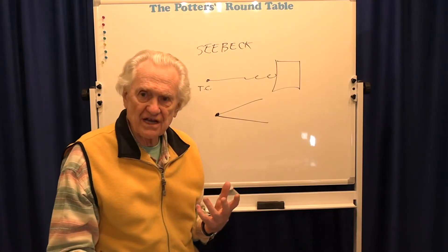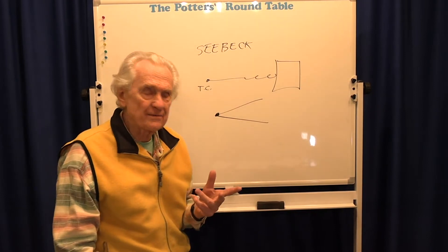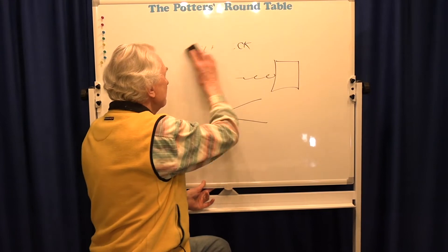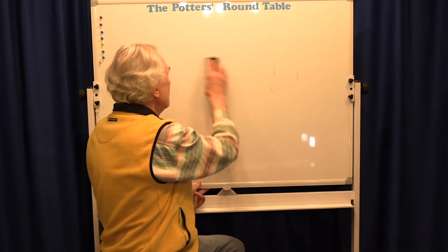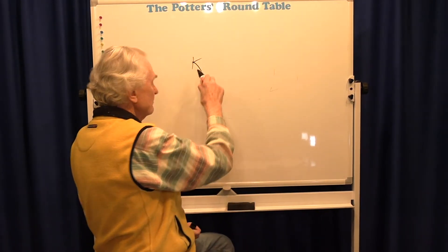You can imagine there are a lot of different combinations of metal wires that you can have. But for pottery, there are really two common types of thermocouples that are used, and what they mean is two different combinations of wires.